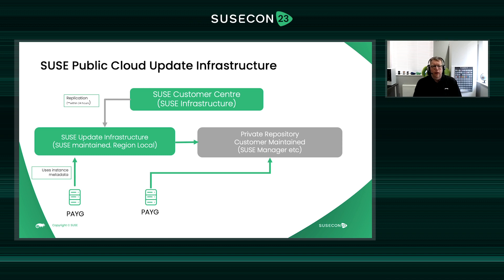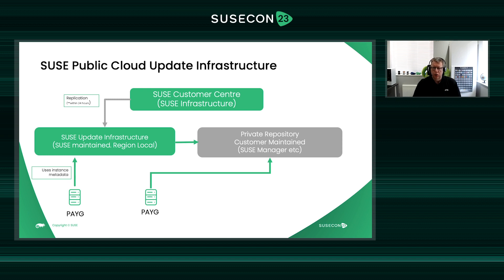Using a private repository such as SUSE Manager is normally the best solution for customers managing SAP workloads. But if you don't want to manage your own update server, you can use SUSE's cloud update infrastructure. At a high level, it's a service SUSE runs and maintains, running in AWS. Patches are regularly mirrored from the SUSE Customer Center — the SCC — which stores and publishes all the latest fixes for supported operating systems. Your AWS instance has metadata identifying it as an on-demand instance with a valid subscription, giving it access to pull updates.